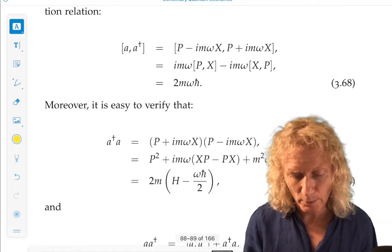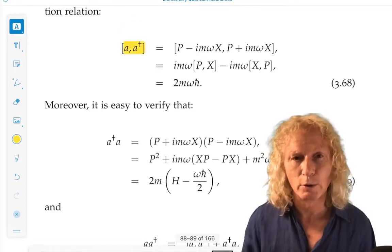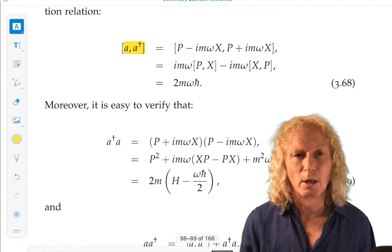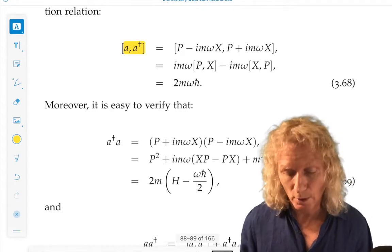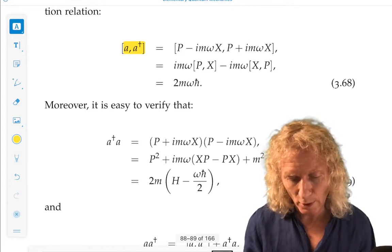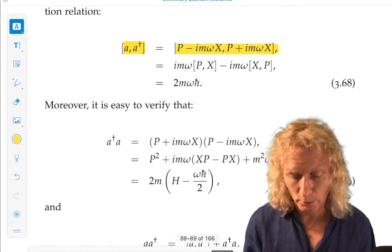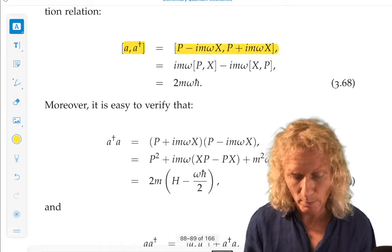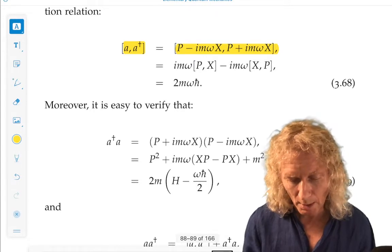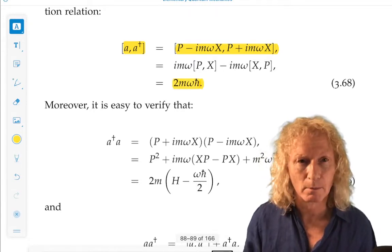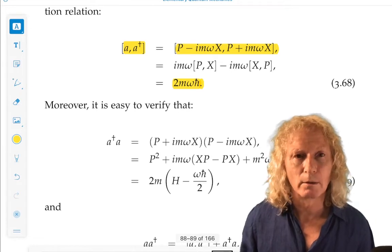So the commutator of a with a dagger. Remember, I told you when we did commutators, you're going to use these over and over. Okay. You just work it out. And I'll let you go through the details and think through them. But they don't commute. And you get 2m omega h bar. Now we can work out that.